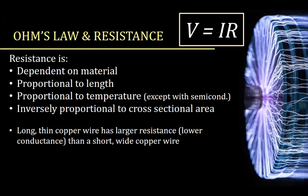We've talked briefly about voltage and introduced current. The newest thing here is resistance. Resistance is dependent on the material we're dealing with, proportional to the length of the piece of material, proportional to the temperature (except with semiconductors, which we'll talk about later), and inversely proportional to cross-sectional area. A long, thin copper wire has a larger resistance than a short, wide copper wire.